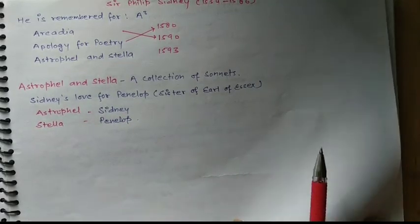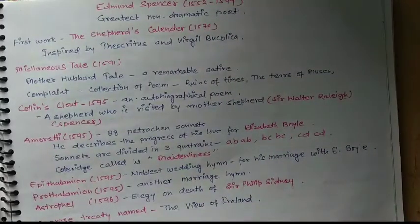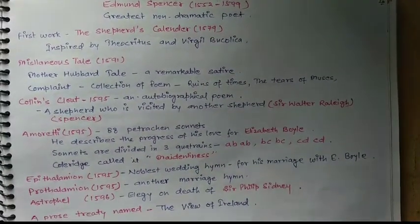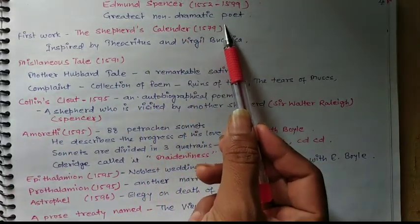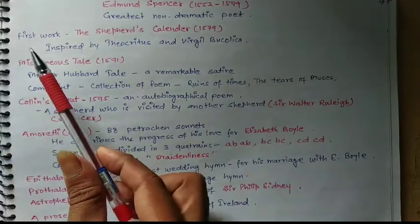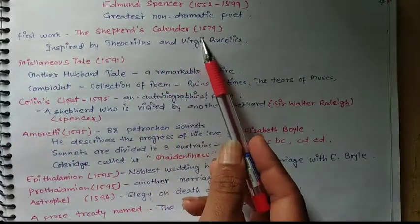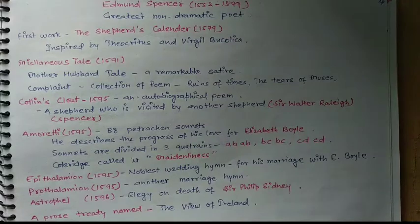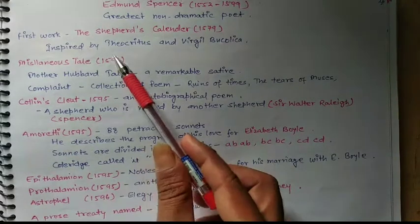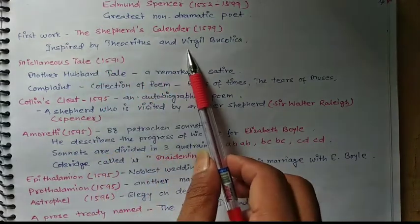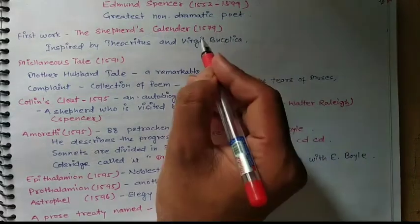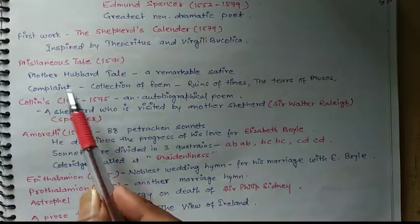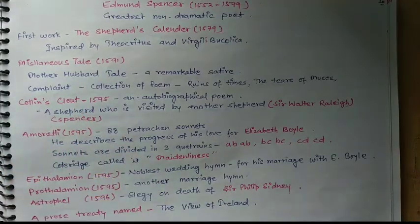Now we are going to talk about Edmund Spenser. He is the greatest non-dramatic poet of the age. His first work was The Shepheardes Calender, which got published in 1579. This work was inspired by Theocritus and Virgil's Bucolica.